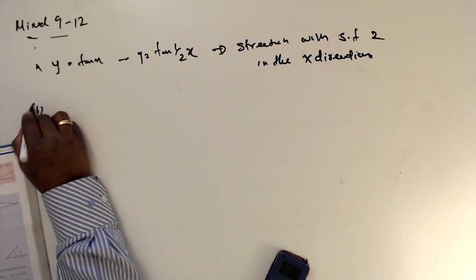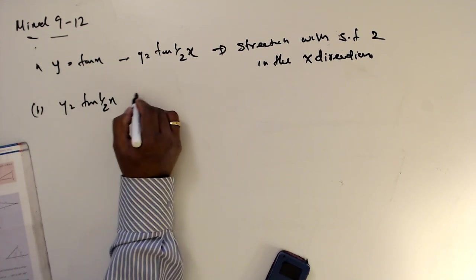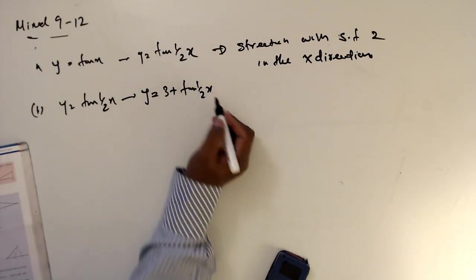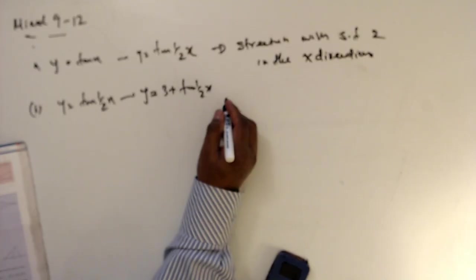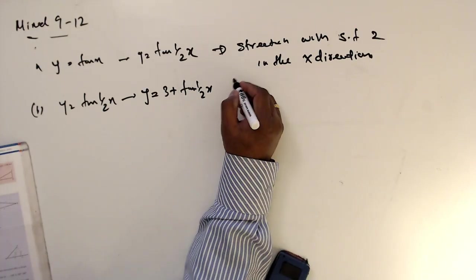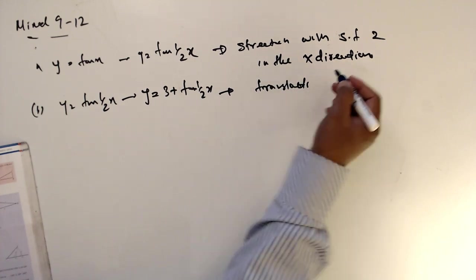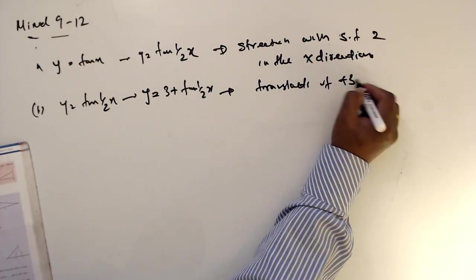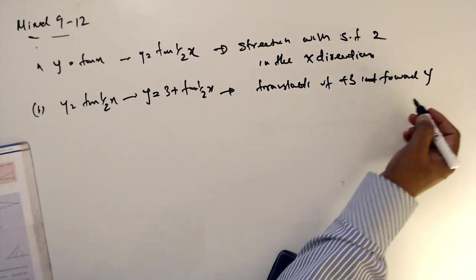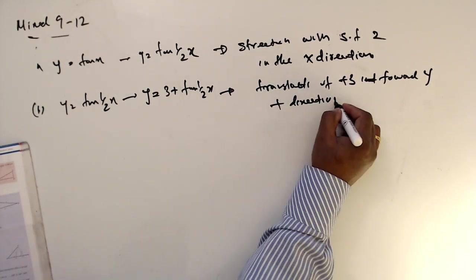Part b: y equals tan(x/2) transforms into y equals 3 plus tan(x/2). We want to shift this graph upward by 3 units, so this is a translation of positive 3 in the y-direction, that is, in the positive y-direction.